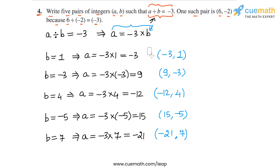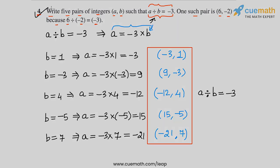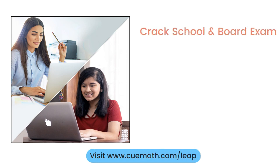For each of these pairs, if you want, you can verify that a divided by b will be equal to minus 3, since this is how we have picked the two integers. So that completes question number 4.